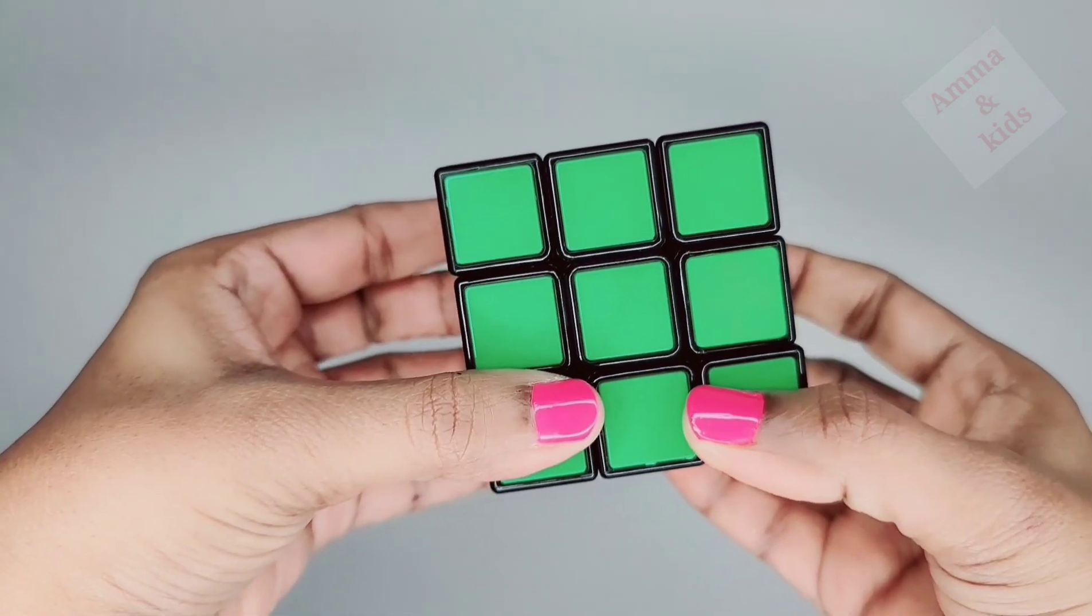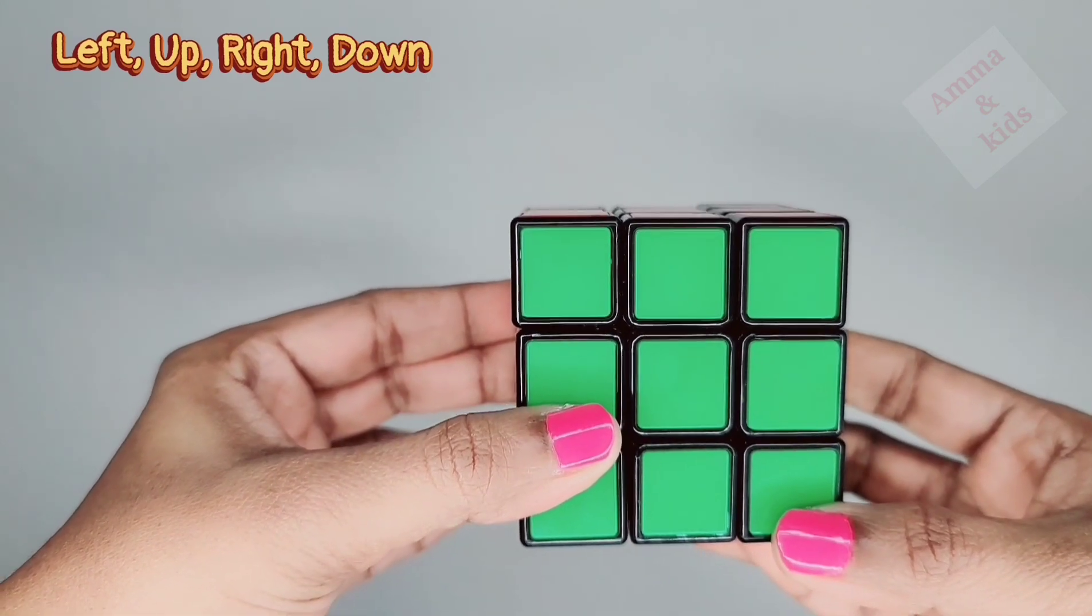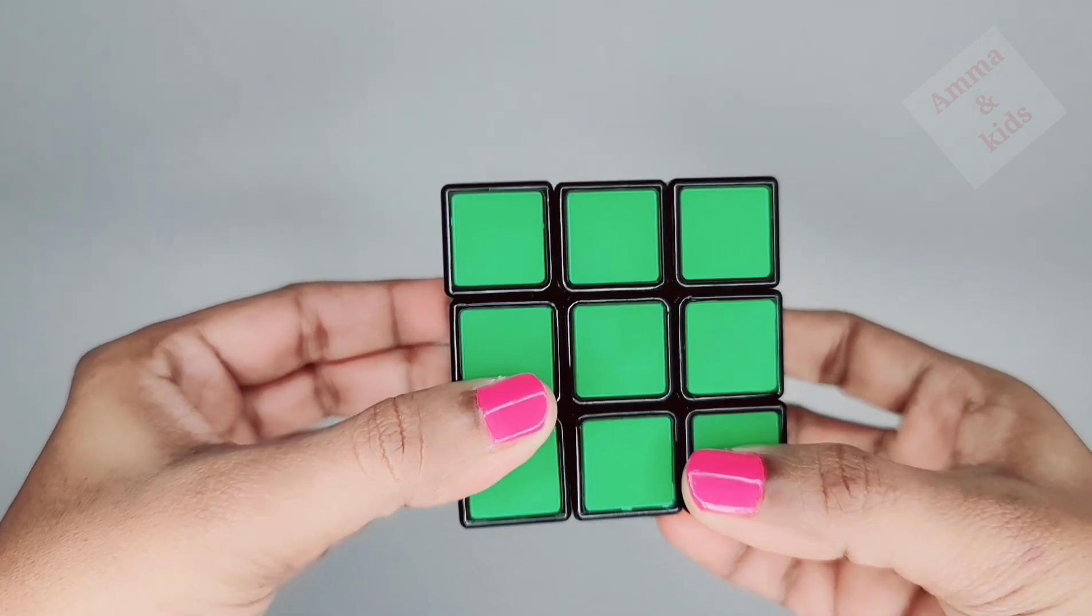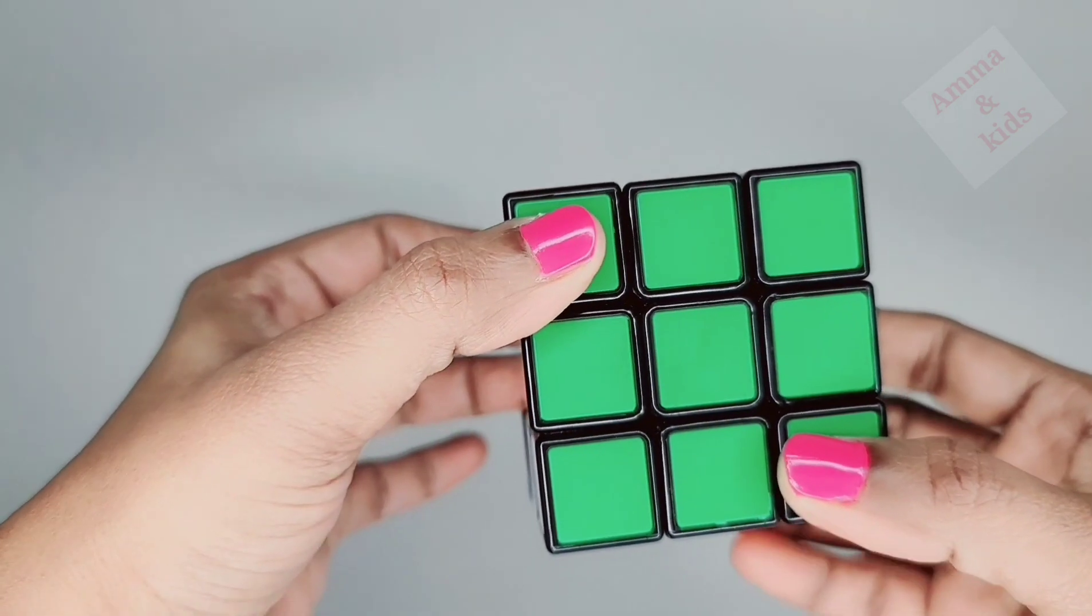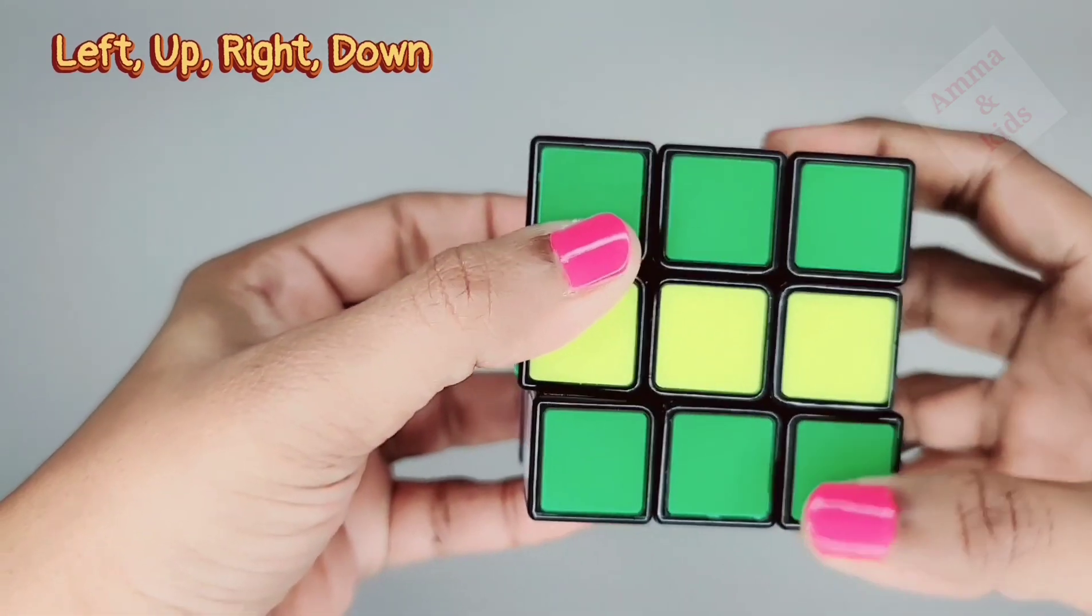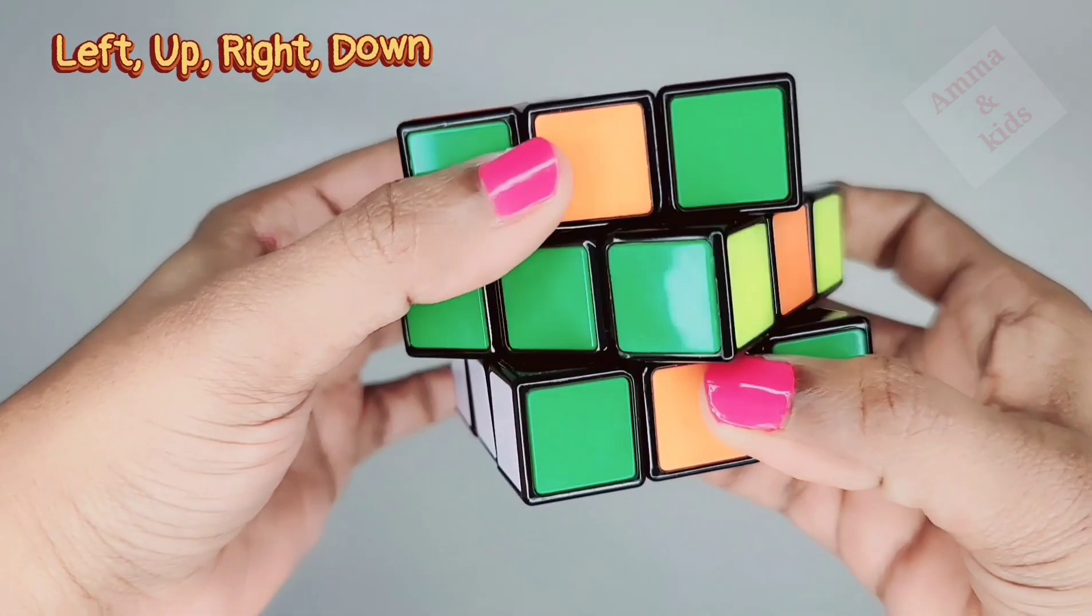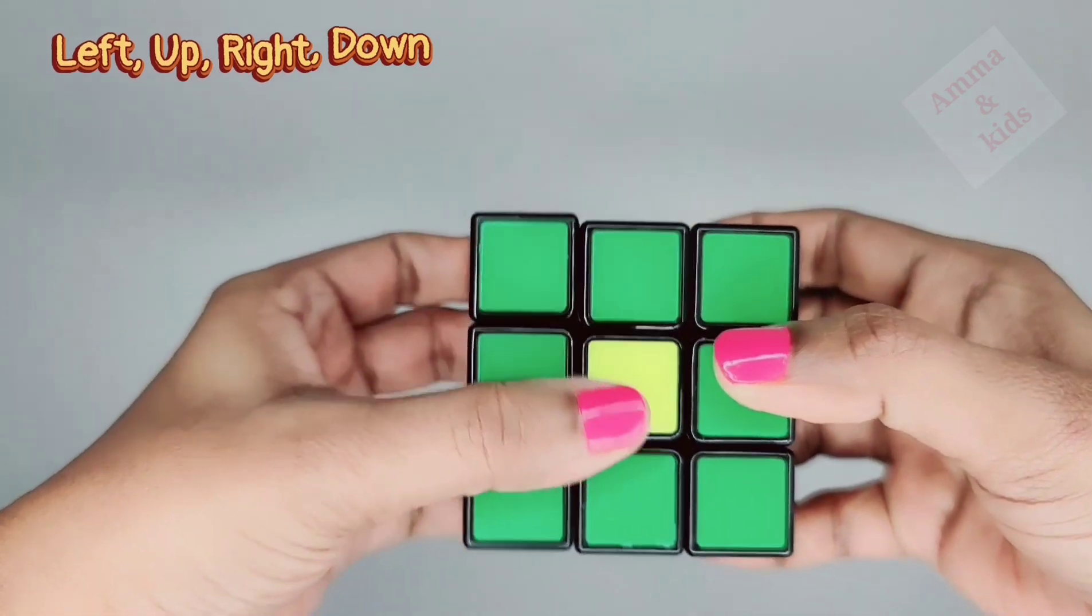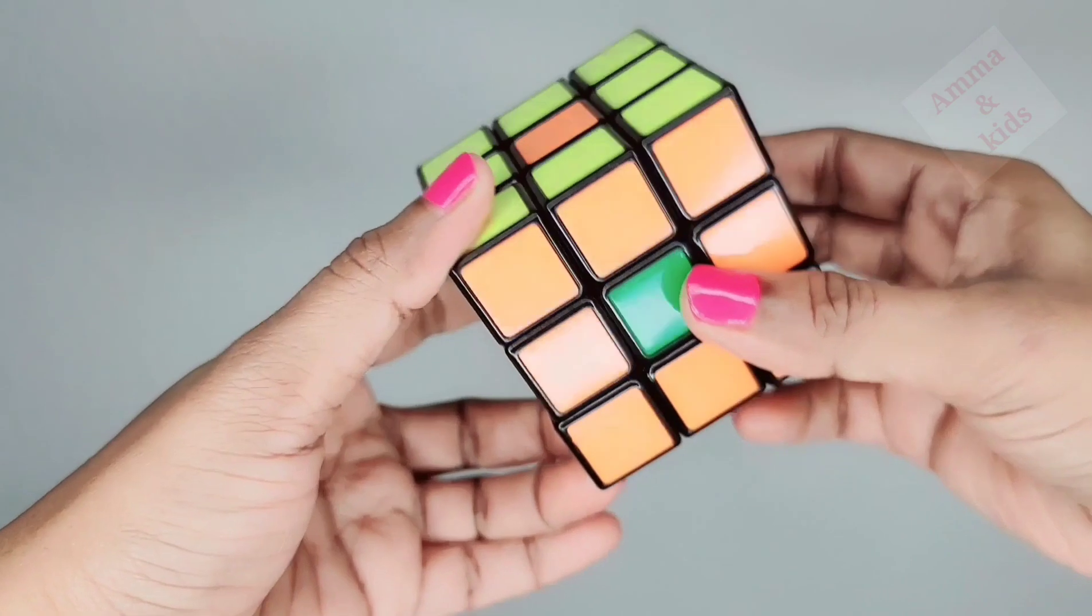Our formula is left, up, right, down. So simple, isn't it? I repeat again, it's left, up, right, and down. All we need to do is turn the middle row to left, turn the middle column to up, turn the middle row to right, turn the middle column to down.